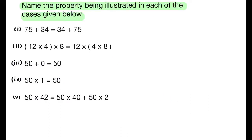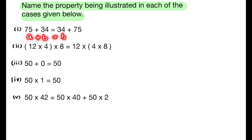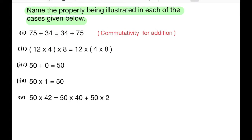Name the property being illustrated in each of the cases given below. First question: 75 + 34 = 34 + 75. For any two whole numbers a and b, a + b = b + a. The property used here is commutativity for addition.